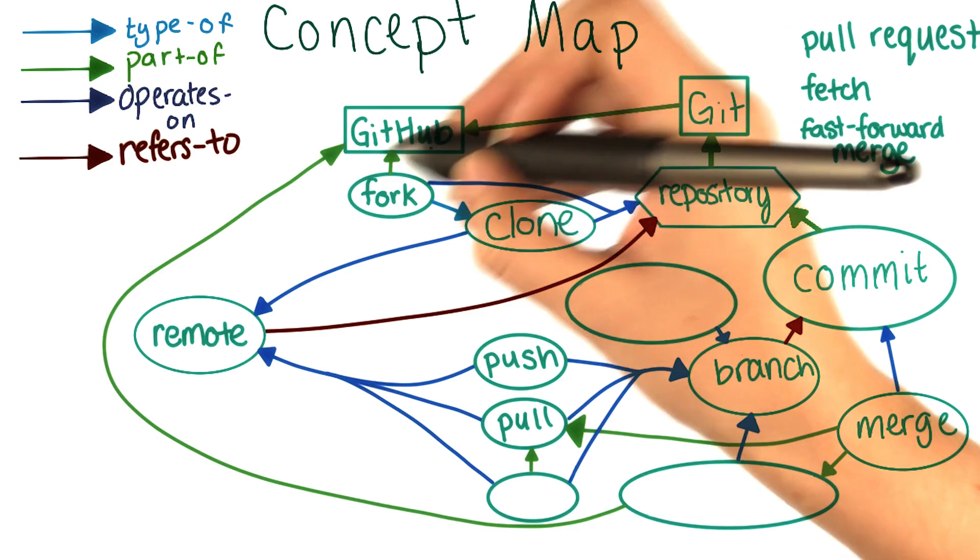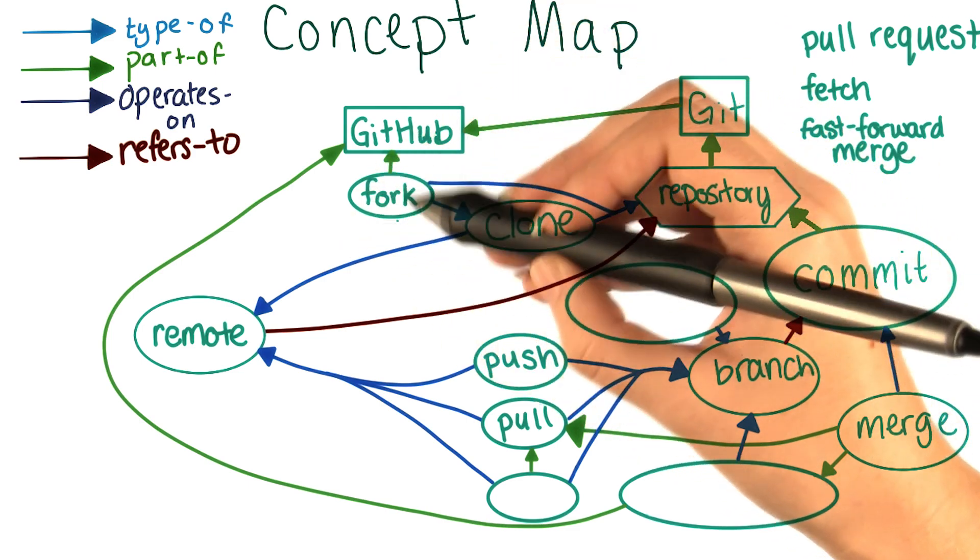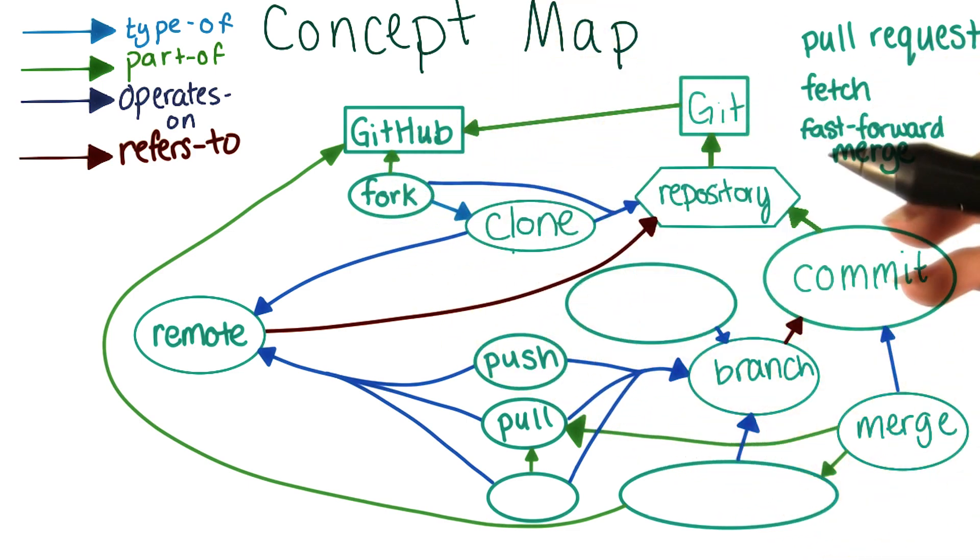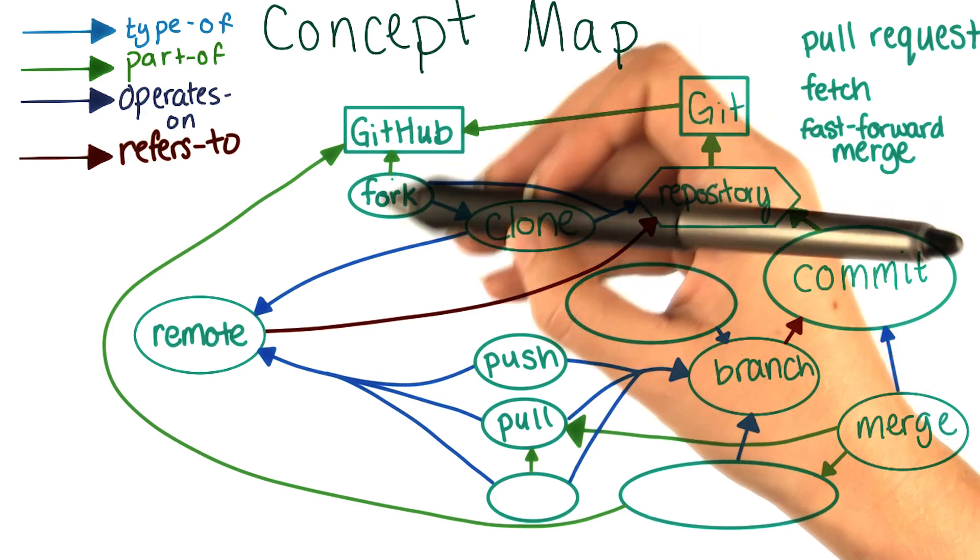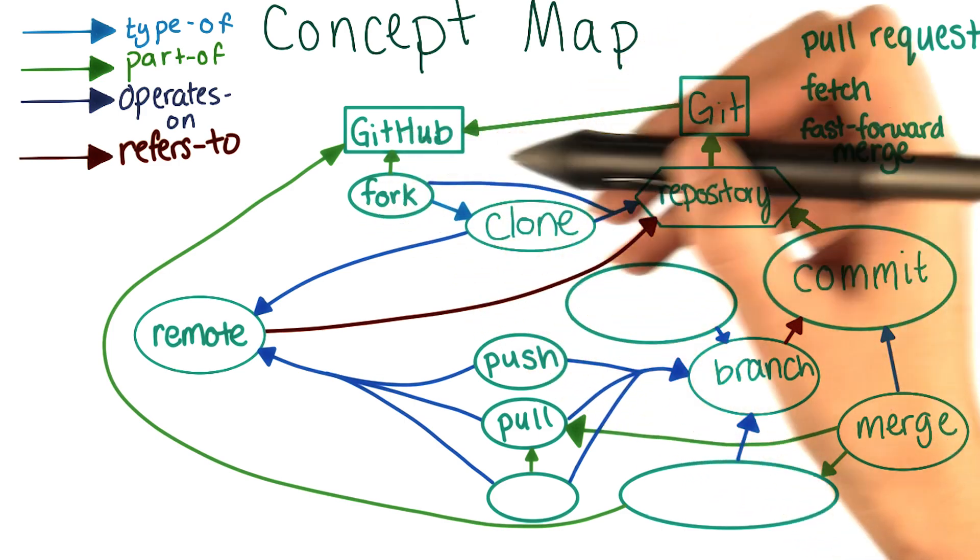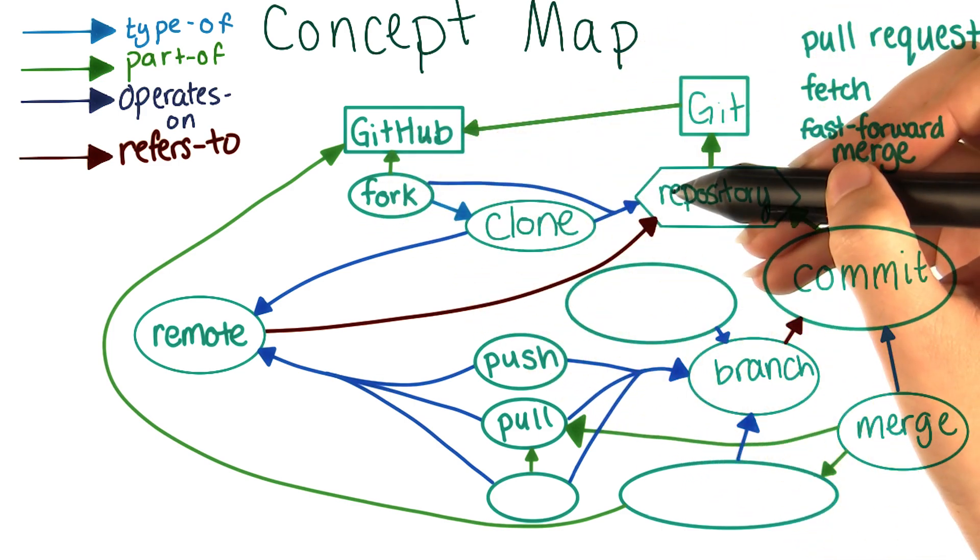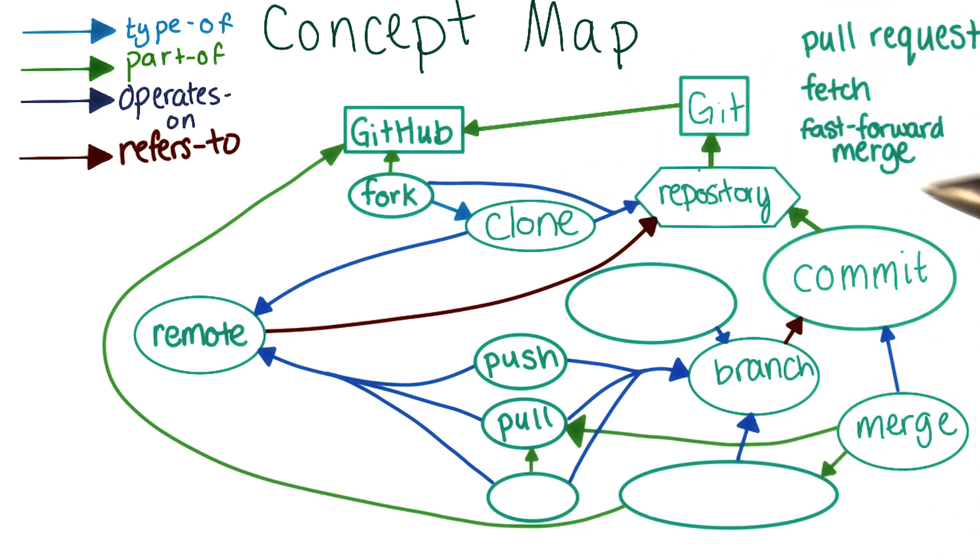Let's double check that this makes sense. Forking is like cloning, but with some extra steps. And you can only do it on GitHub itself. It also takes a repository and makes another repository, so it does operate on repositories. All right, let's move on.